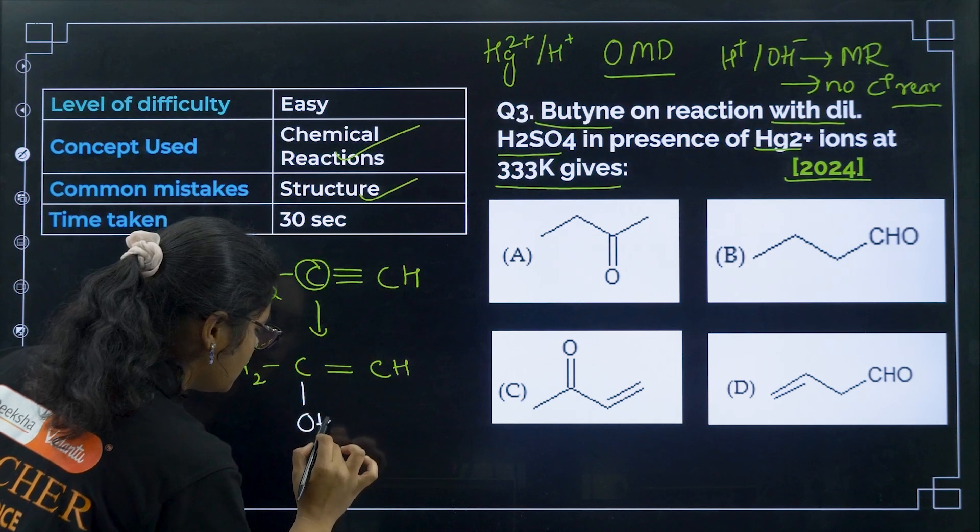Question 24 from 2017: lower members of aliphatic carboxylic acids are soluble in water. Whenever a water solubility question comes, you should immediately think about hydrogen bond formation. Option number A — formation of hydrogen bonds with water — is the answer. Super easy question, 30 seconds is enough.